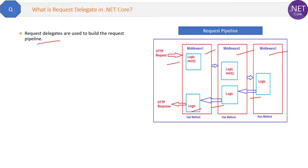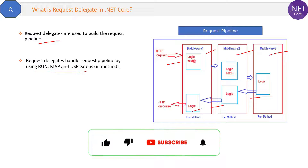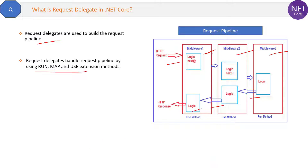The request delegate handles the request pipeline by using the Run, Map, and Use extension methods. These methods control how middleware passes control from middleware one to middleware two to middleware three, and how they respond back. That is the job of the request delegate — accomplished with Run, Map, and Use.